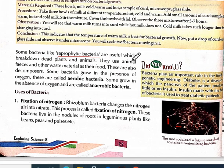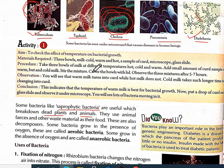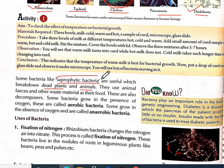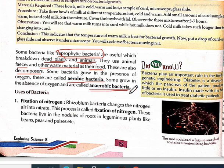Some bacteria, like saprophytic bacteria, are useful because they break down dead plants and animals. They use animal feces and other waste material as their food, so they clean the environment — these are decomposers. Some bacteria grow in the presence of oxygen and are called aerobic bacteria. Some grow in the absence of oxygen and are called anaerobic bacteria. Decomposers clean our environment and are useful to us.